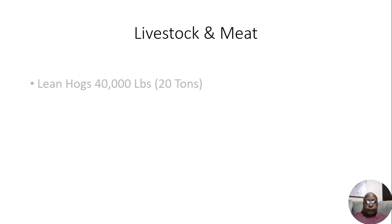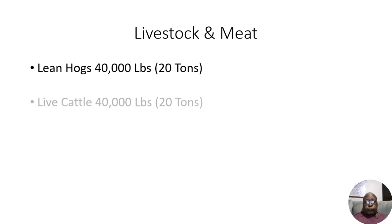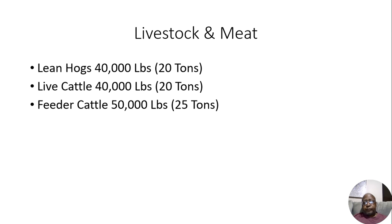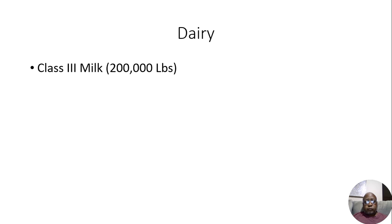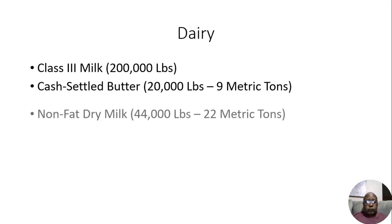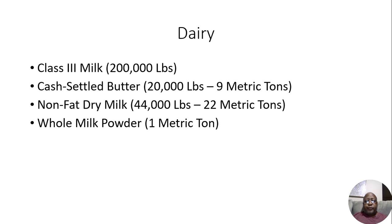The next category is livestock and meat. We have lean hogs, live cattle, and feeder cattle. Our next category is dairy. We have class three milk, cash settled butter, non-fat dry milk, whole milk powder, and skim milk powder.